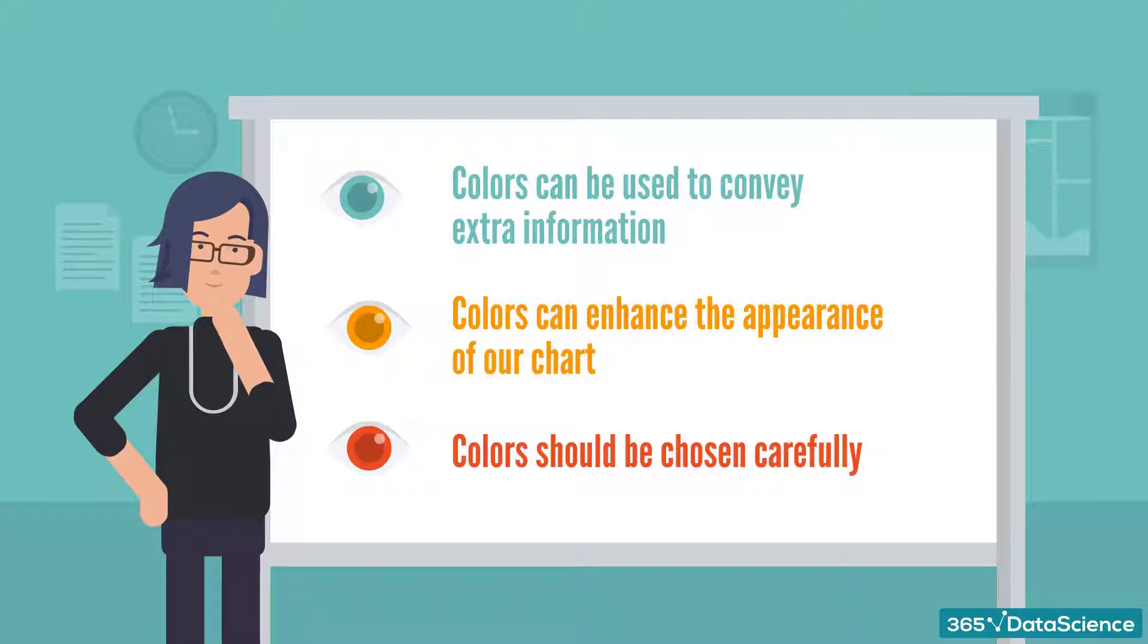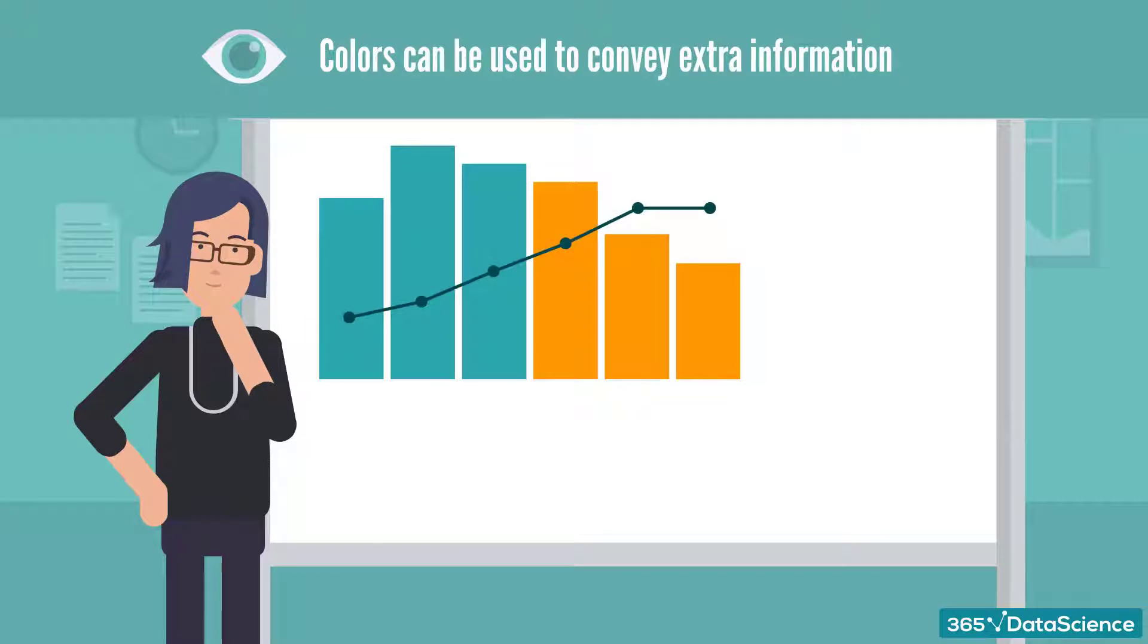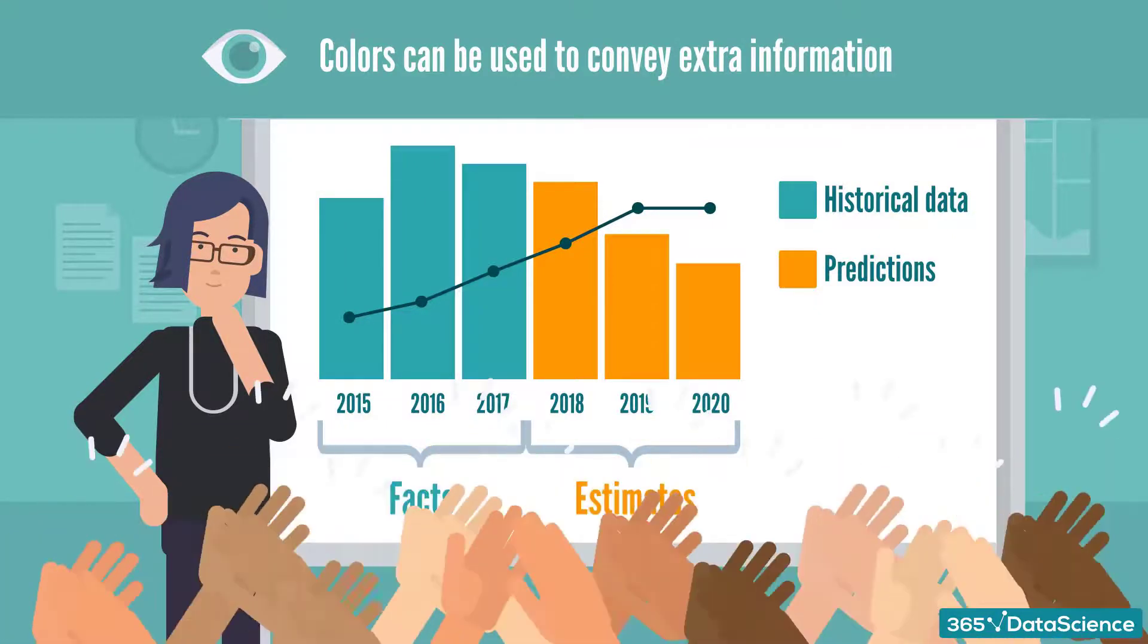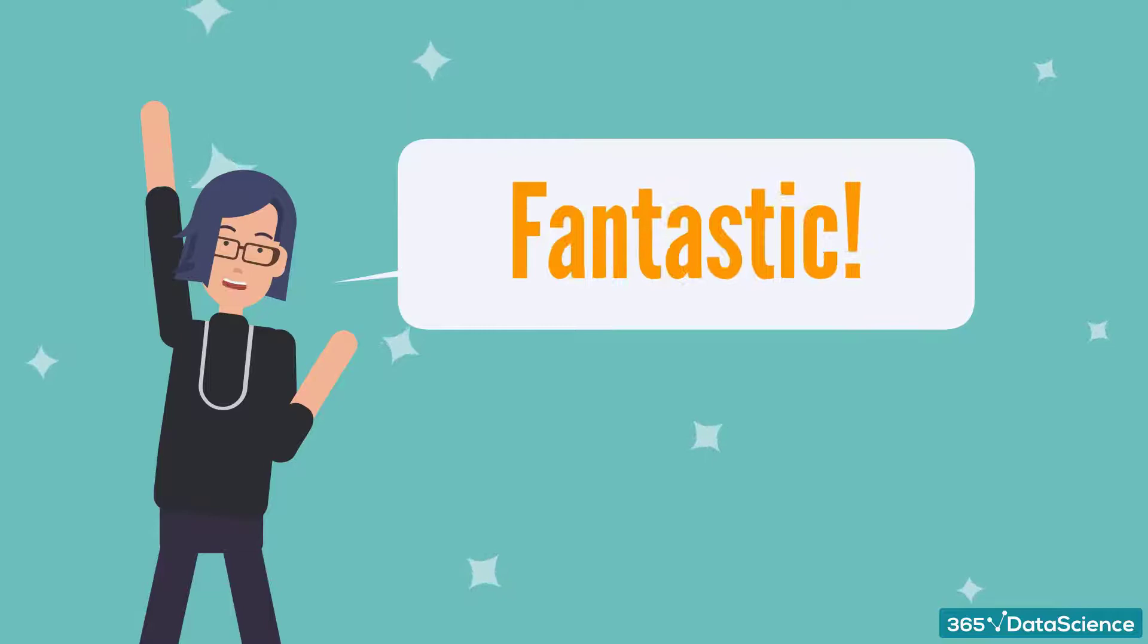Let's start with the most important one. Colors can be used to convey extra information. Here's a bar chart showing information about the financials of a company for the last three years as well as for the next three years. The historical information is in the same color, while the projections for the future in a different one. This distinction is quite important as these bars are facts, while these estimates. While this information was available in the labels, we have also used color to emphasize that. In this way, we ensure that our audience will read our chart correctly. So you see, color could be used in a chart to speak to you.